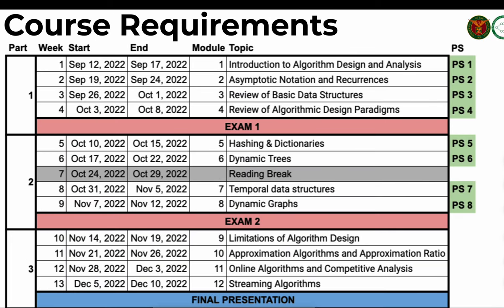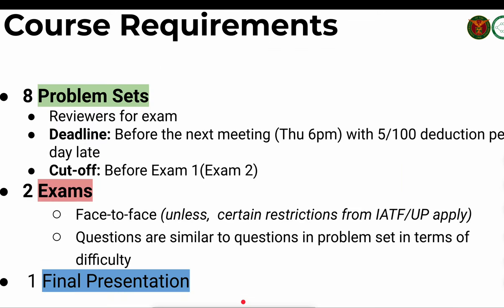For course requirements, we have a problem set — eight problem sets total, one for each module in parts one and two — and two exams, one for part one and one for part two. There is also a final presentation. So three types of course requirements: problem sets, exams, and final presentation. The problem set can serve as a reviewer for the exam and as a weekly assessment of whether concepts and algorithms are understood.